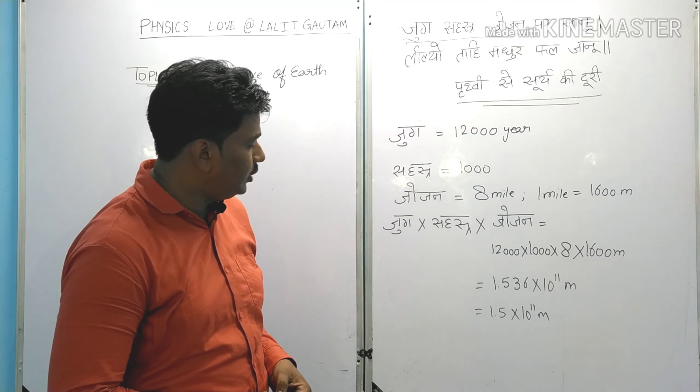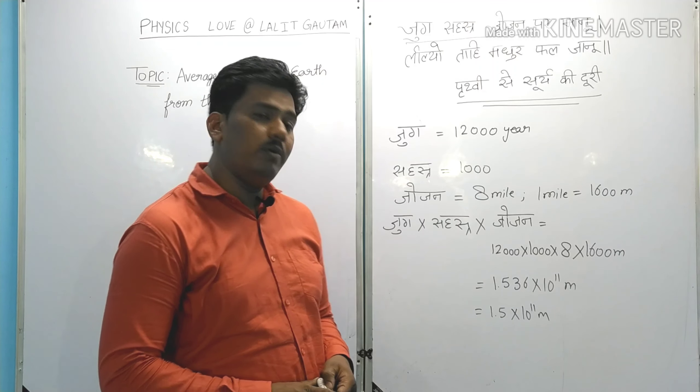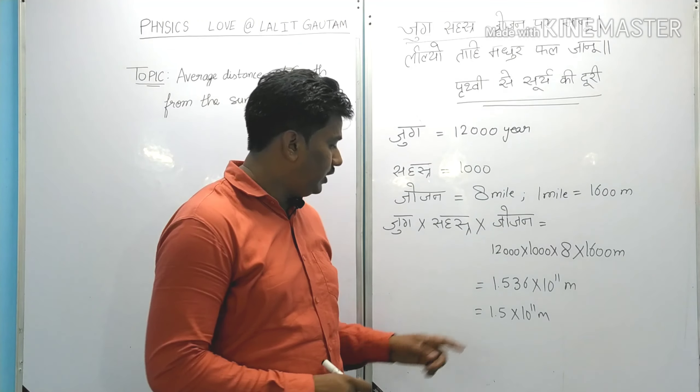It works out to be 1.536 × 10¹¹ meters, or approximately 1.5 × 10¹¹ meters. So the value calculated from the Hanuman Chalisa chopai is 1.5 × 10¹¹ meters.